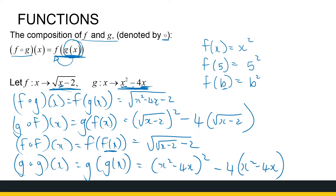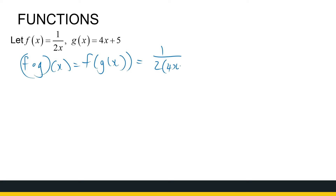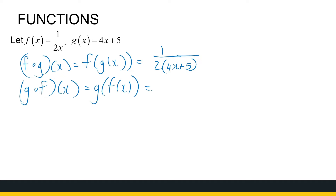Let's look at some more examples. f of x is 1 over 2x, g of x is 4x plus 5. f composition g of x is then f of g of x, meaning go to function f and everywhere I see an x, I now put the whole of g of x. g composition f of x is g of f of x, which means go to function g and everywhere I see an x, I now put the whole of f of x. And that's the composition.